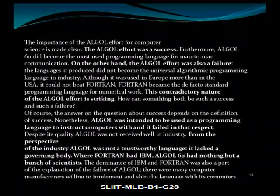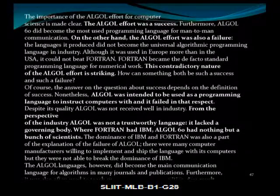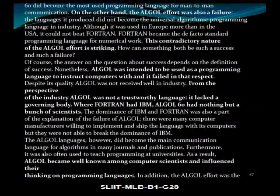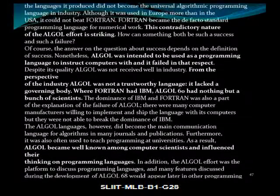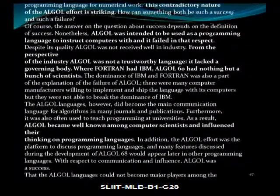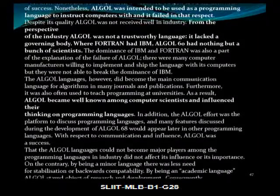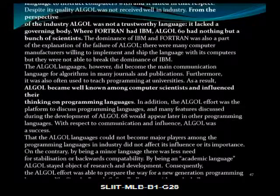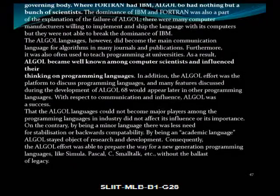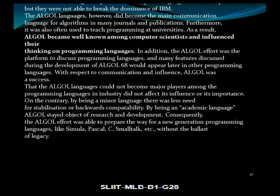How can something be both such a success and such a failure? The answer depends on the definition of success. ALGOL was intended to be used as a programming language to instruct computers, but despite its quality, it was not received well in the industry. It was not seen as a trustworthy language — it lacked a strong backer. Where FORTRAN had IBM, ALGOL 60 had nothing but a bunch of scientists. The dominance of IBM and FORTRAN was a major part of the explanation for ALGOL's failure.